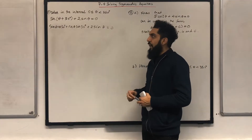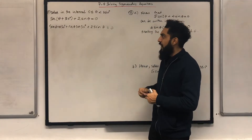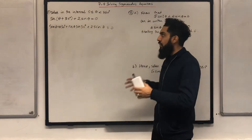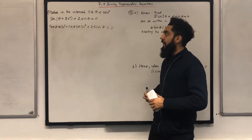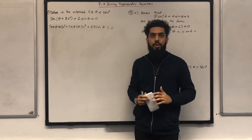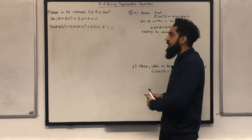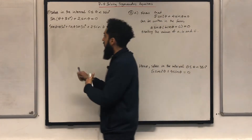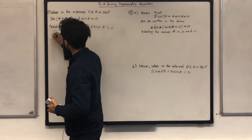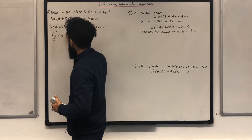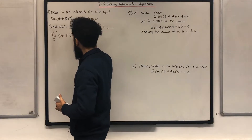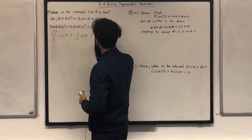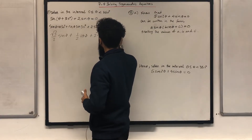I know the crispy values of cos 30 degrees and sine 30 degrees. Cos 30 degrees is square root 3 over 2 and sine 30 degrees is 1 over 2. Putting these values into the equation, I get square root 3 over 2 sine theta plus a half cos theta plus 2 sine theta equal to 0.